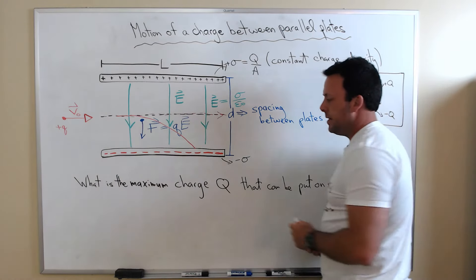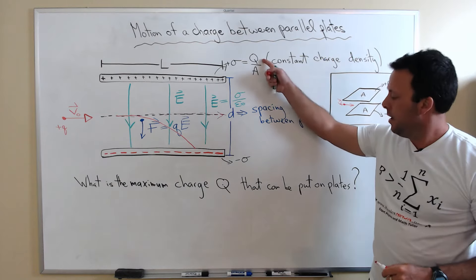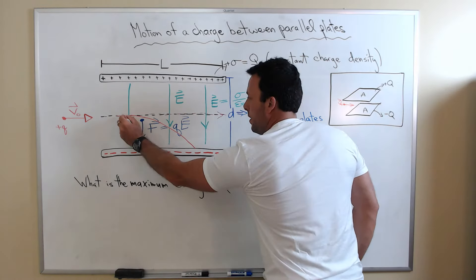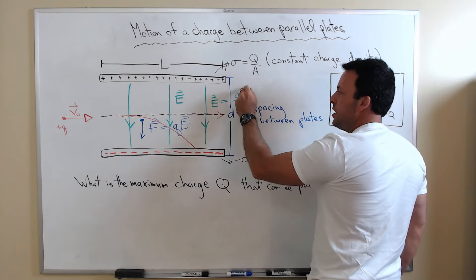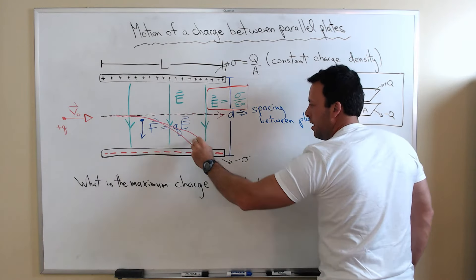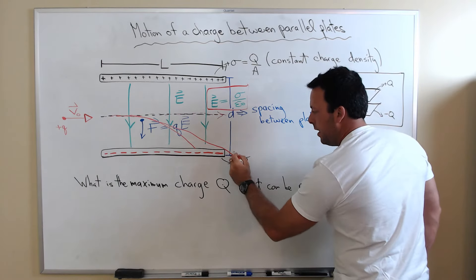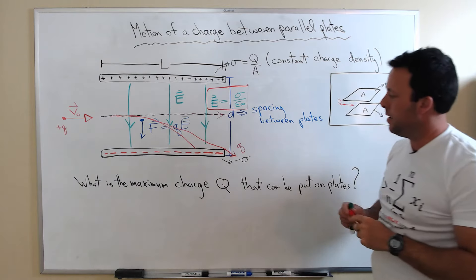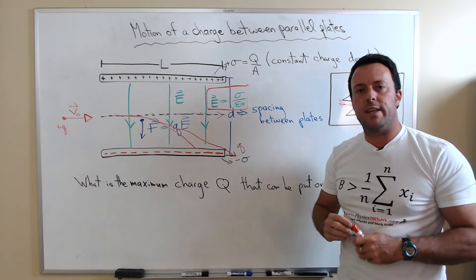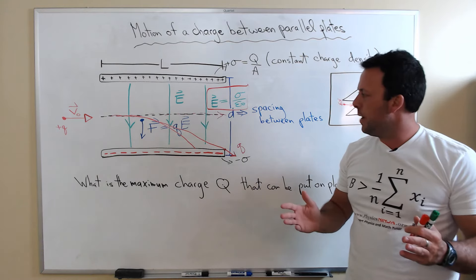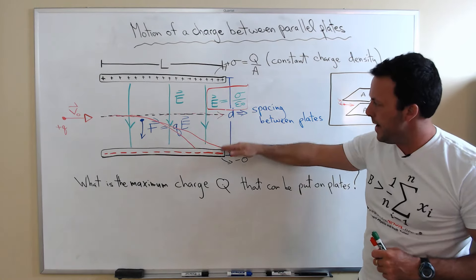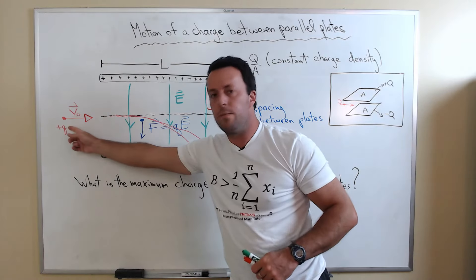The question is: what is the maximum charge big Q that I can put on the plates so that I have the maximum deflection of that positive charge? If I put just the right amount of charge on the plates, I generate just the right electric field such that the charged particle, as soon as it enters the region, starts getting deflected. The little charge Q is going to exit the field region at some particular angle — not hitting the plate, not going straight — just the maximum deflection possible. Let's go to the whiteboard and calculate what value of uppercase Q I need.